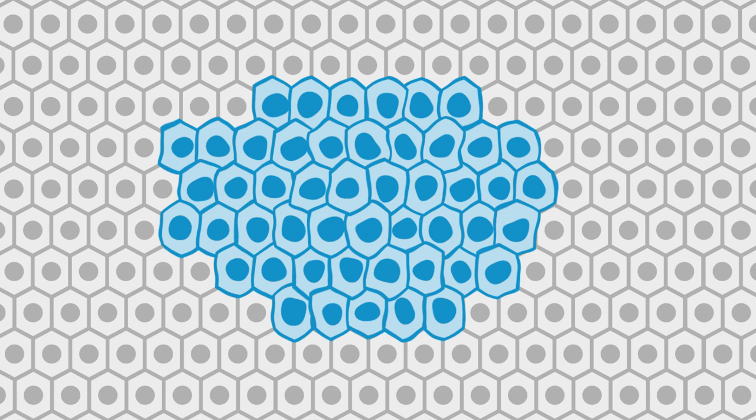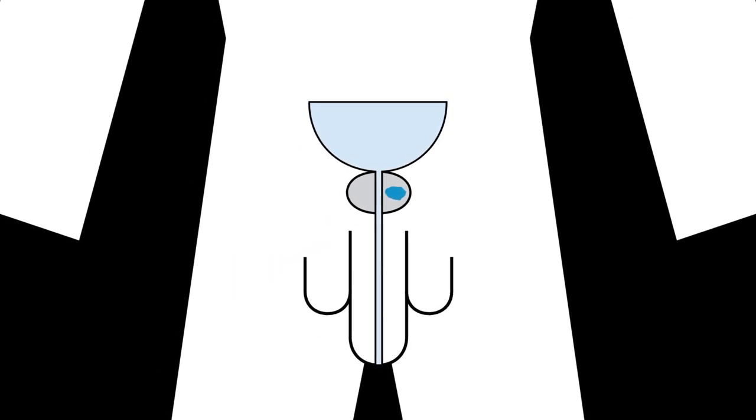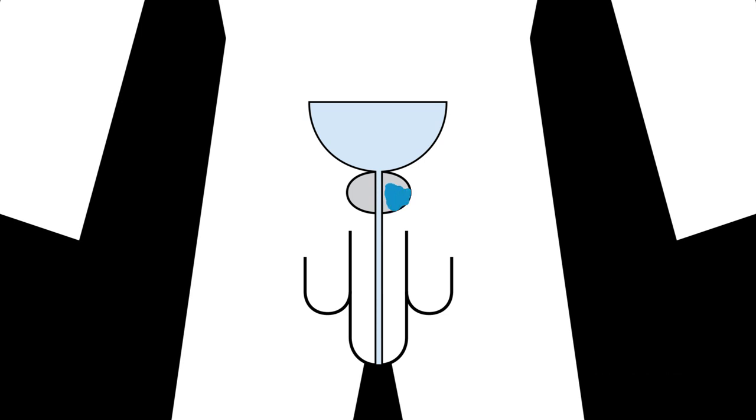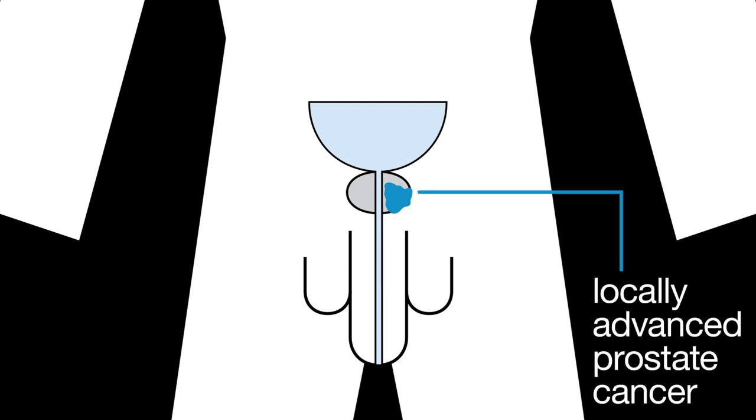When you're diagnosed with prostate cancer, your cancer may be inside the prostate only. This is known as localized prostate cancer. Or it might have spread just outside the prostate. This is known as locally advanced prostate cancer.